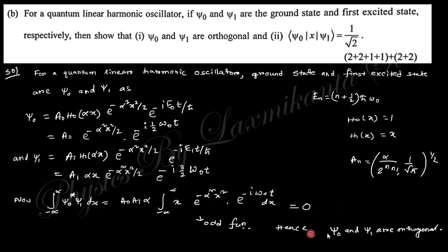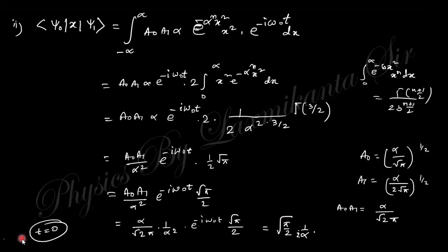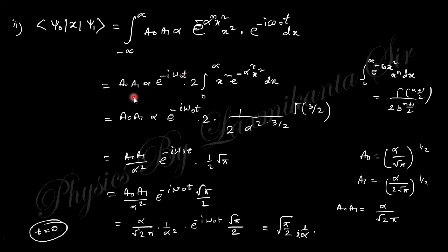For a quantum harmonic oscillator, ψ₀ and ψ₁ are orthogonal. Integrating ψ₀ and ψ₁ from −∞ to +∞, we finally obtain the orthogonality expression.